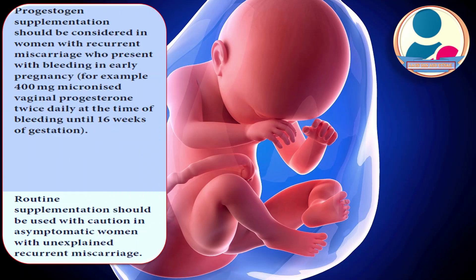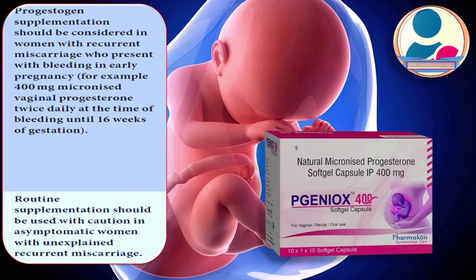Progesterone supplementation should be considered in women with recurrent miscarriages who present with bleeding in early pregnancy — for example, 400 mg micronized vaginal progesterone twice daily at the time of bleeding until 16 weeks of gestation. However, routine supplementation should be used with caution in asymptomatic women with unexplained recurrent miscarriages.